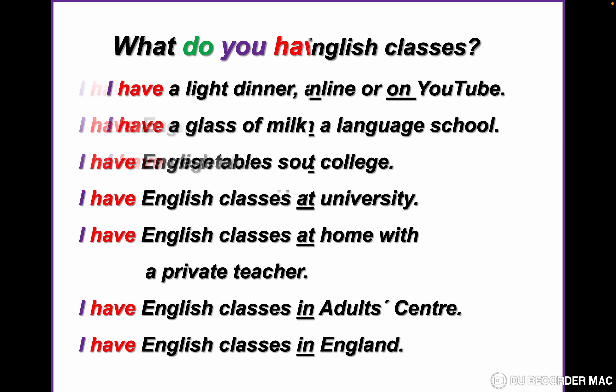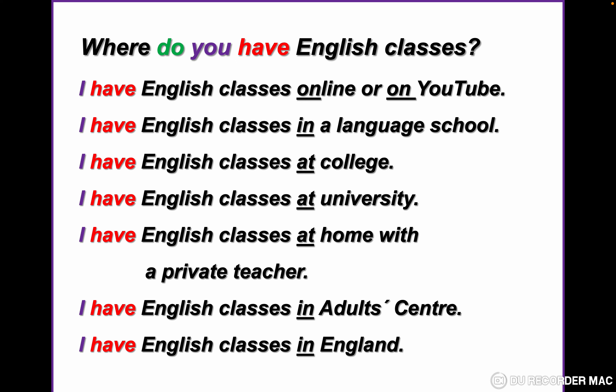In this example, we changed the WH word. In the previous sentences we had 'what', now we have 'where'. Where do you have English classes? I have English classes online or on YouTube. I have English classes in a language school, at college, at university, at home with a private teacher, in an adults center, or in England or any country you like to say. So 'to have English classes' means to study English.